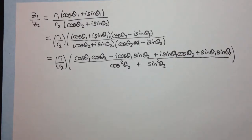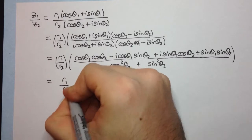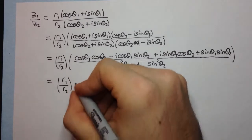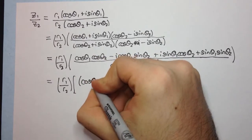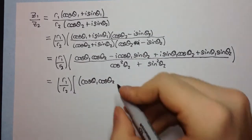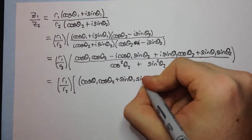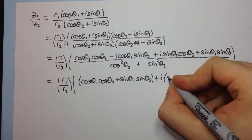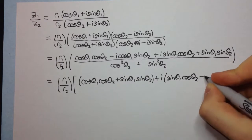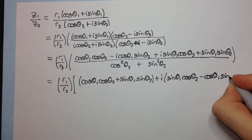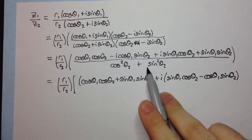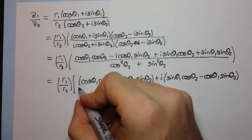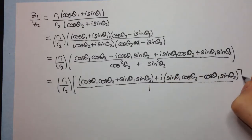Right, now let's group the real and imaginary parts together in the numerator. cos theta1 cos theta2. That's going to be cos theta1 cos theta2 plus sin theta1 sin theta2 plus i times sin theta1 cos theta2 minus cos theta1 sin theta2. All over cos squared theta2 plus sin squared theta2. But cos squared of any angle plus sin squared of that same angle, well that's just equal to 1. That's our trig identity, right? So that's equal to 1.